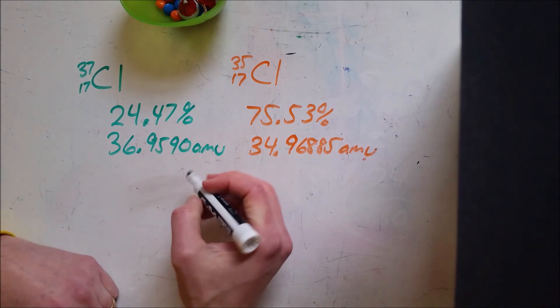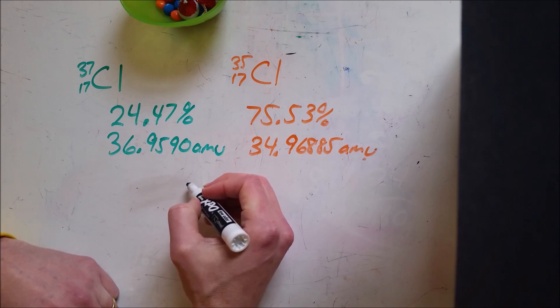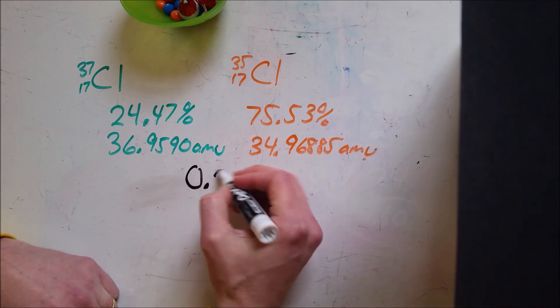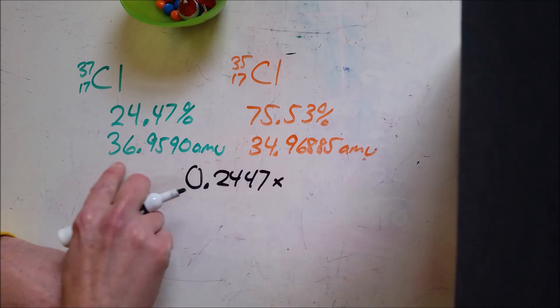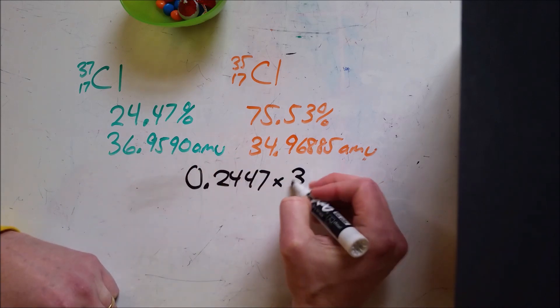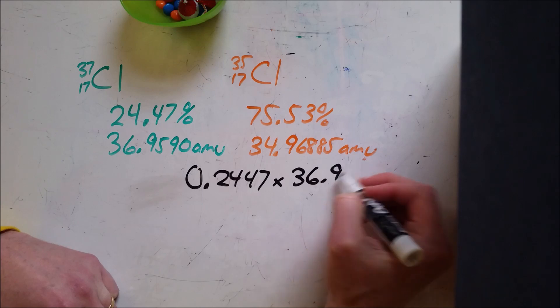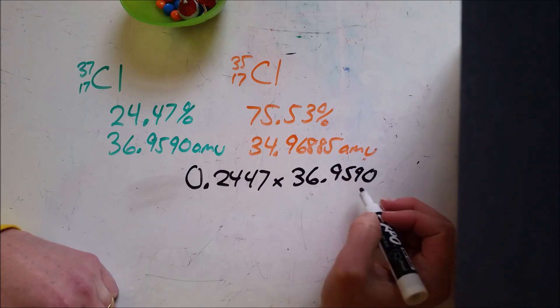is I would take this percentage and change it into that relative abundance. So I would take 0.2447 and I would multiply that by that individual mass, 36.9590 AMU.